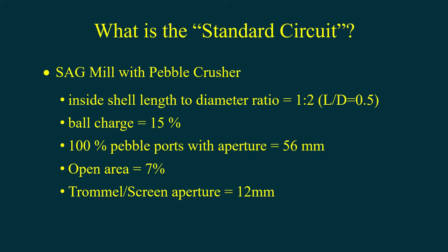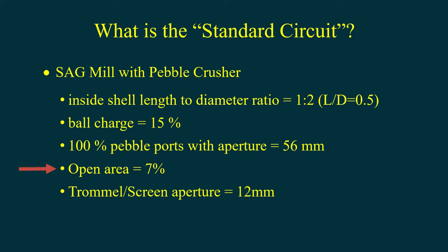These are the details of the standard circuit. It is a SAG mill with a pebble crusher. It has an L over D — a length to diameter ratio — of 0.5, 15% ball charge, 100% of the grate is pebble ports and the apertures of the pebble ports are 56 millimetres. The open area is 7%, and the trommel screen aperture that follows the SAG mill — whose oversize is fed to the pebble crusher — has an aperture of 12 millimetres.